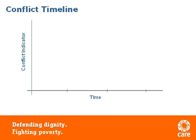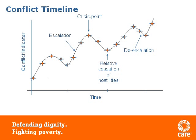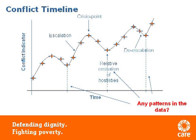Next, you'll need to start plotting your data and drawing a line of best fit across that data set. As you can see from this line, we can now mark out key trends in this particular conflict. Here, for example, is the crisis point, and here is the relative cessation of hostilities. Here's an escalation and de-escalation. And sometimes when completing this exercise, you'll notice patterns in the data. Here, for example, we can see regular peaks of conflict at regular time intervals. This could suggest, for example, that conflict is triggered by particular events — festivals, seasons and elections.